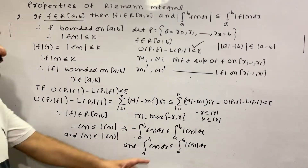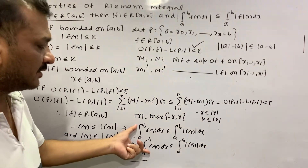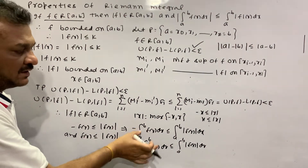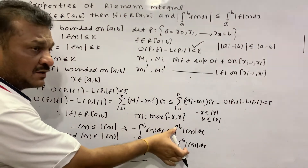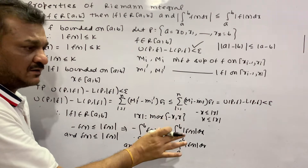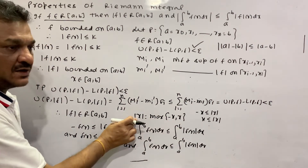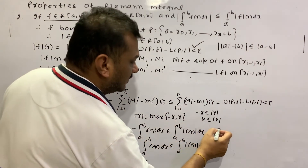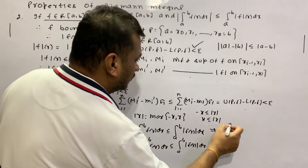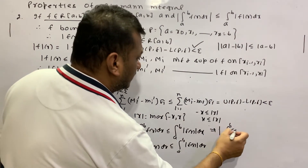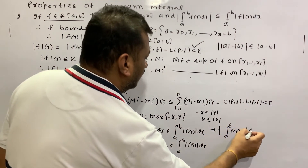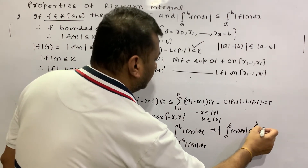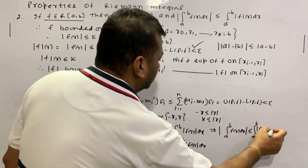Combining these two cases, the maximum of {∫F dx, -∫F dx} equals |∫F dx|. Therefore: |∫ from A to B of F(x) dx| is always less than or equal to ∫ from A to B of |F(x)| dx. This is the result we needed to prove.